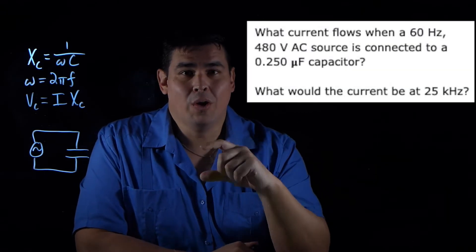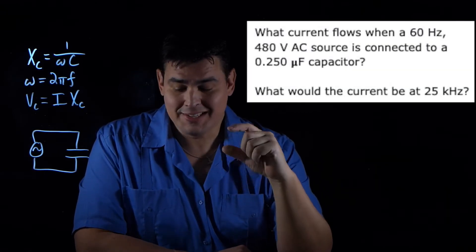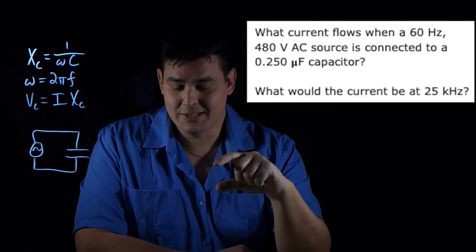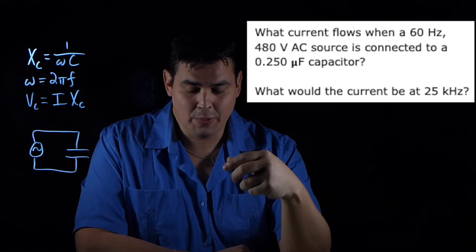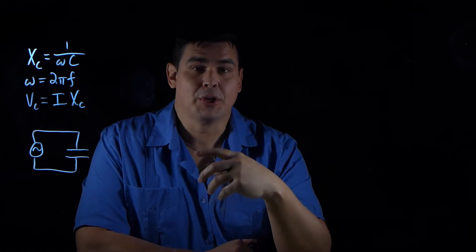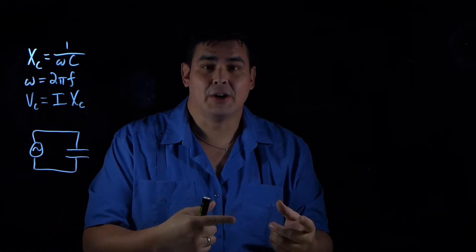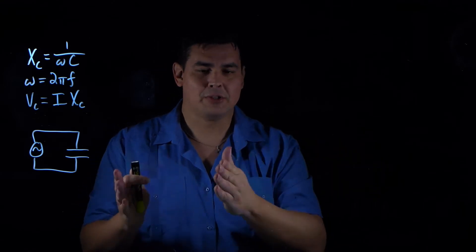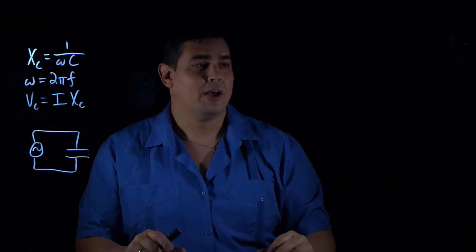Last example. So this one, I want to know what current's going to flow when I have a 60 Hertz, 480 Volt AC source that's connected to a 0.250 microfarad capacitor. And then it's asking, what would the current be if instead of 60 Hertz, it was 25 kilohertz? So it's basically comparing two situations.